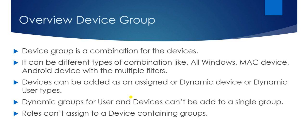A device group is a combination of devices — when we club together multiple devices and add them to a group, that is called a device group. It can be different types of combinations: all Windows, Mac, Android devices, or with multiple filters. For example, you can create a device group for Windows devices with a specific version, or Mac devices with a specific department. Devices can be added as an assigned or dynamic device group.